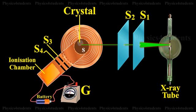The reflected beam after passing through the slits S3 and S4 enters the ionization chamber. The X-rays entering the ionization chamber ionize the gas which causes a current to flow between the electrodes, and the current can be measured by the galvanometer G.